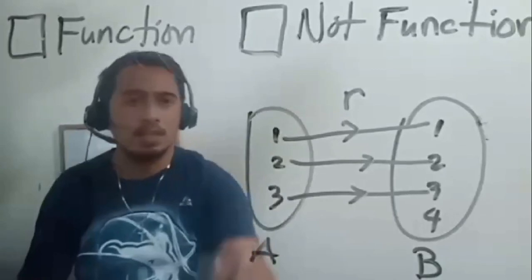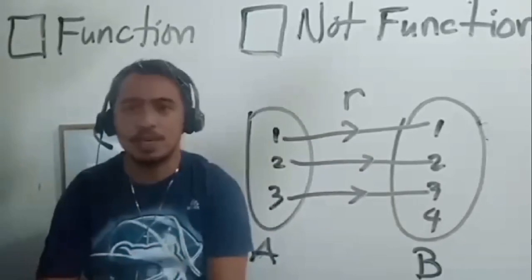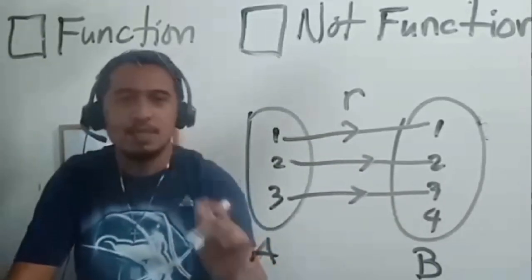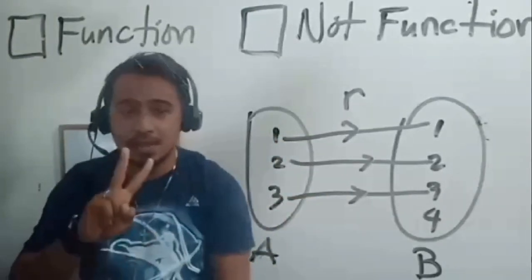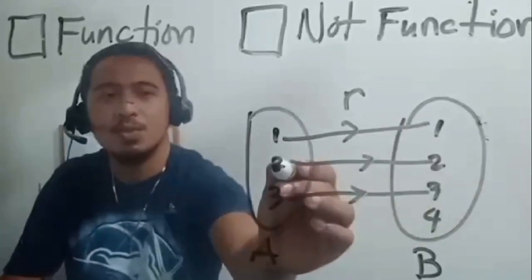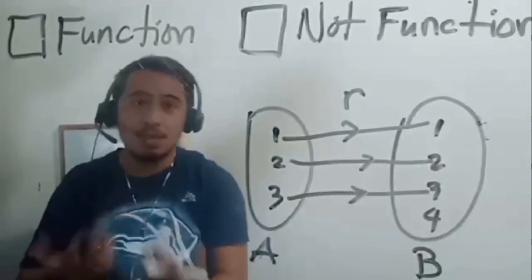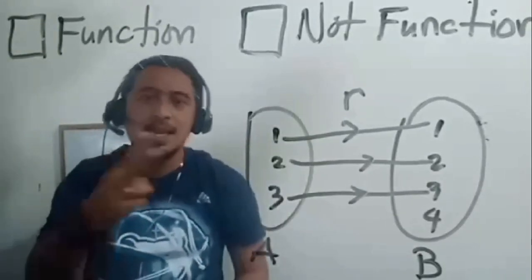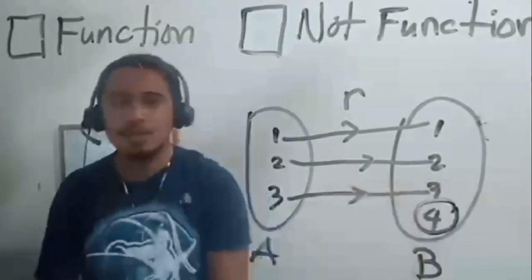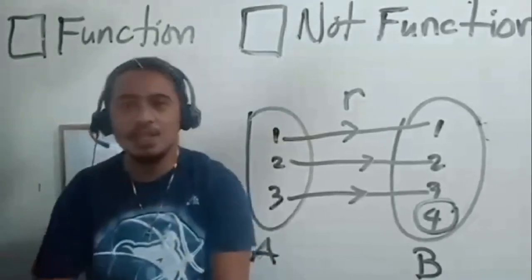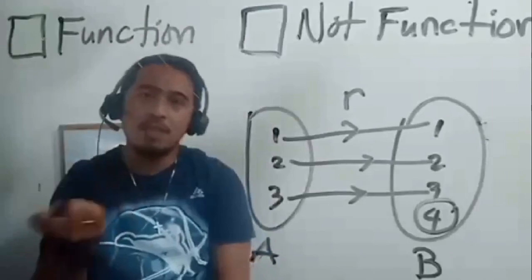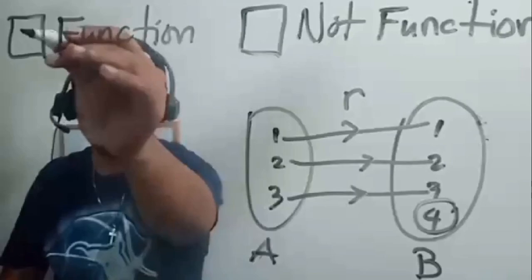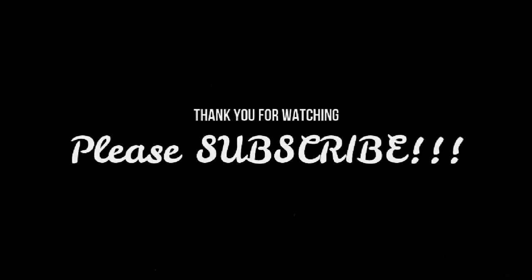How about rule R — is it a function? Condition 1: element 1 is assigned to 2 and 3 — all domain elements are used, no problem. Condition 2: the assignment of 1 is unique, the assignment of 2 is unique, and the assignment of 3 is unique. Both conditions are satisfied, so it is a function. From the definition of function: all elements must be used, and the assignment of each element must be unique.